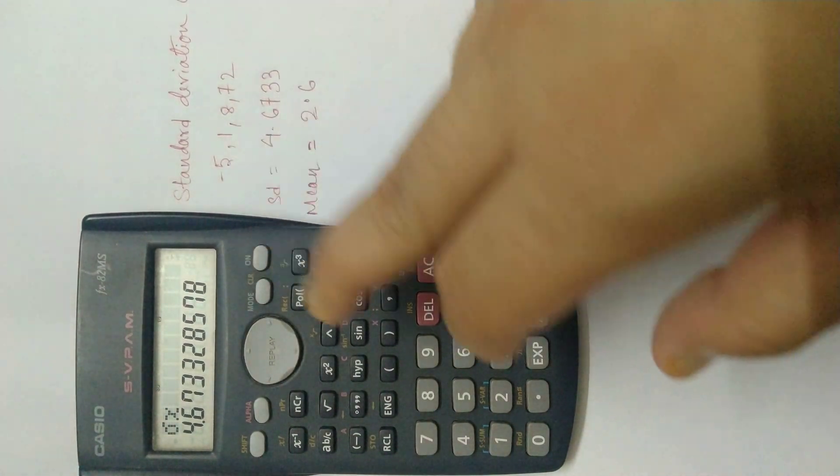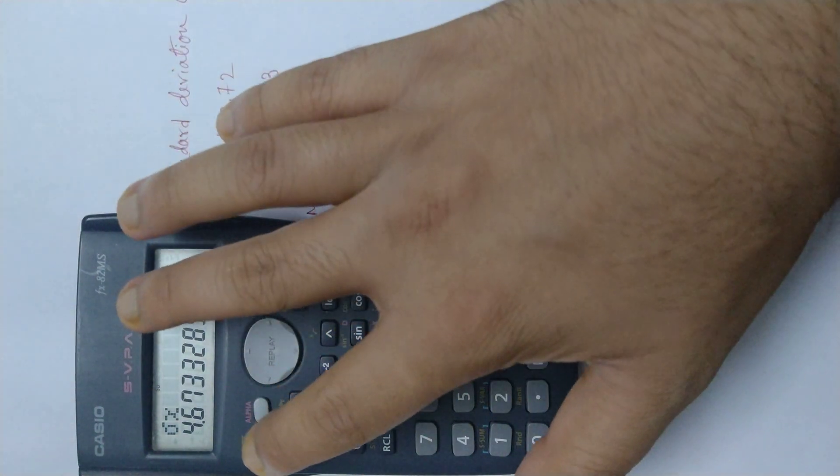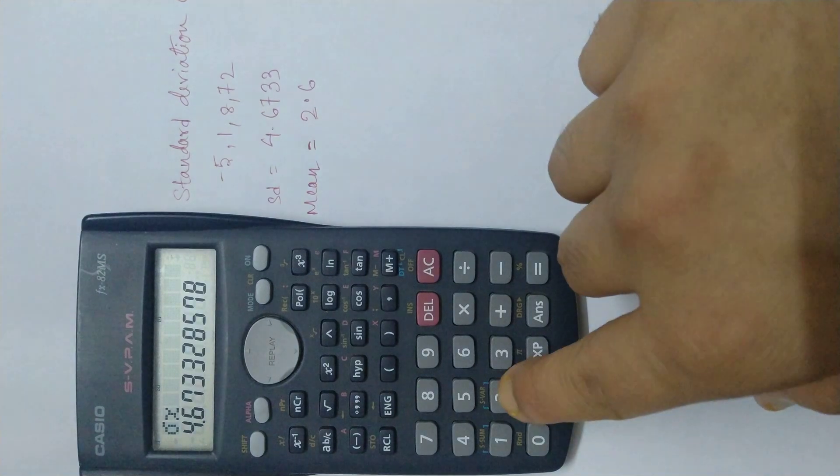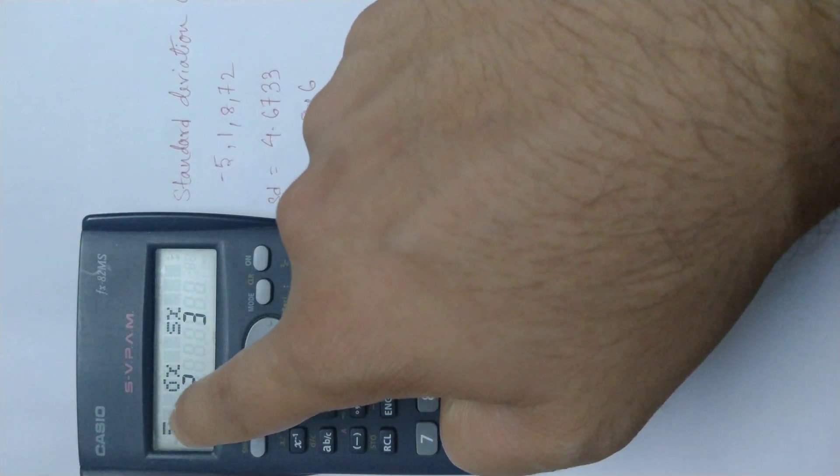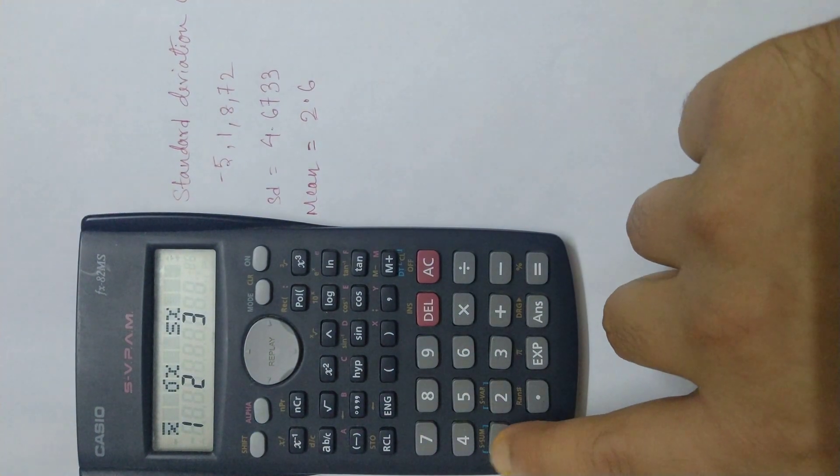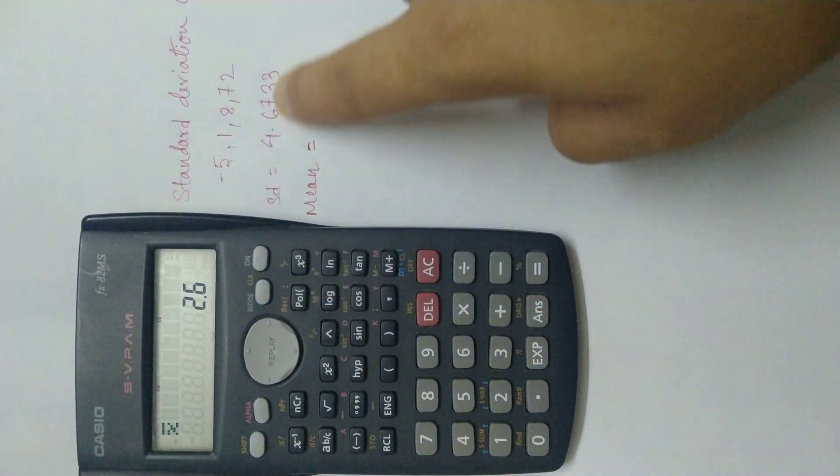And also you can find the mean in a very simple way. Although it is not required because finding mean is itself very easy. You press shift, then again 2. Then here you can see over 1 it is x bar which means the mean. So if you press 1 then equals, you will get 2.6 which is actually the mean of these numbers.